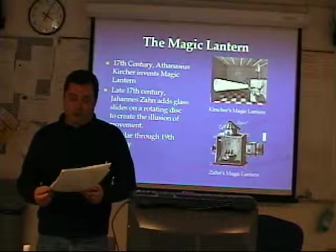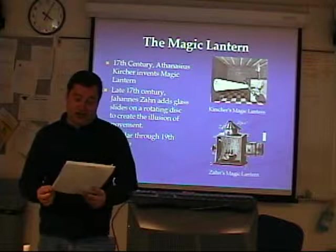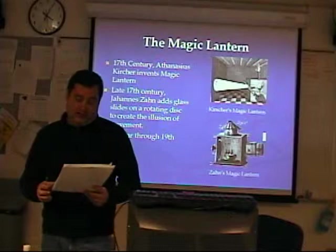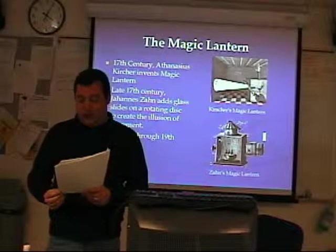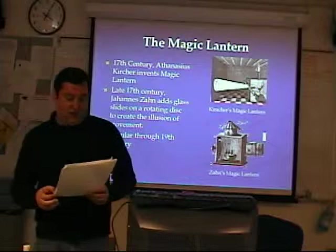In the 17th century, a Jesuit priest named Athanasius Kircher invented a device called the Magic Lantern — a box with a lantern and glass discs with images, essentially a slide projector. By the late 17th century, Johannes Zahn mounted the glass slides on a revolving disc, which gave the illusion of motion. These devices were used to entertain the royal courts of Europe, and eventually magic lanterns were used in public halls to entertain large audiences, remaining popular through the 19th century and even vaudeville shows.